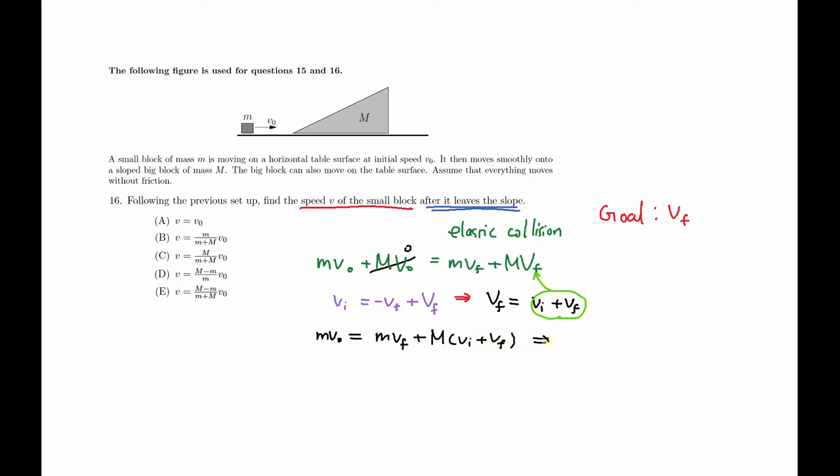Okay, now I can distribute this. I'm going to change that to V0 because that's what we see in our choices. So V0 plus big M and a small VF. Okay, so we're looking for the VF, so we want to keep our VF on the right side and probably move the V0 to the left side.